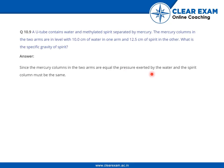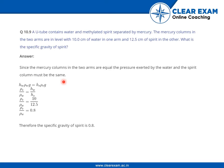Since the mercury columns in the two arms are equal, the pressure exerted by the water column and the spirit column must be the same. Therefore: h_w × ρ_w × g = h_s × ρ_s × g. From this formula we can derive the relationship between the densities.